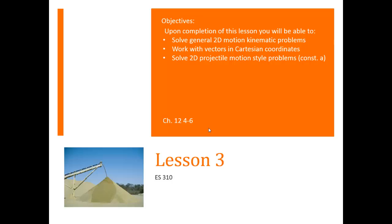In 2D motion, this constant acceleration motion is often called projectile motion, because it's the motion that occurs as an object or a projectile falls through the air.